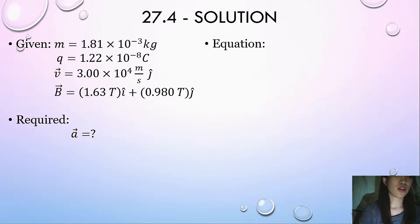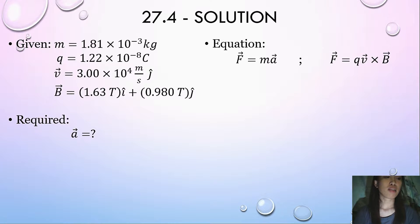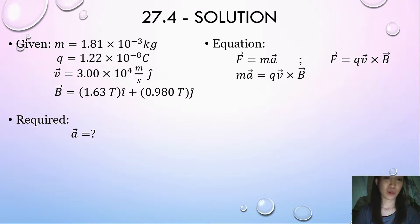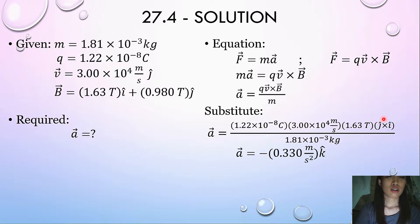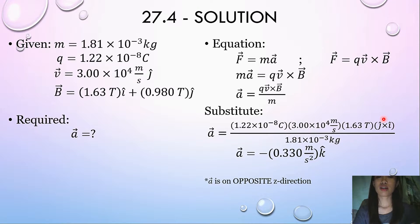From Newton's second law, force equals mass times acceleration. The magnetic force is given by F equals q times V cross B. Equating these two expressions, we get ma equals qV cross B, or the acceleration equals qV cross B over m. Substituting the given values, j-hat cross i-hat gives us negative 0.330 meters per second squared k-hat. So the acceleration is in the negative z-direction, and it is perpendicular to both velocity and magnetic field.